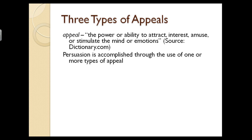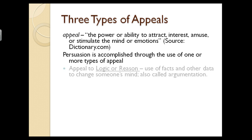Persuasion is usually accomplished through one or more of three types of appeal. First, an appeal to logic or reason, where we use facts and other data to change someone's mind. This is also called argumentation — not simply meaning people are in an argument, but the use of logic or reason to build and construct a carefully crafted argument to get to a particular end or goal.